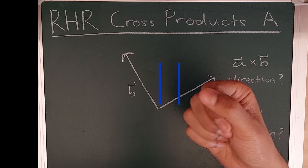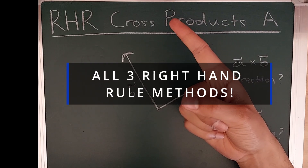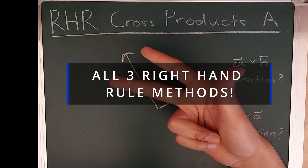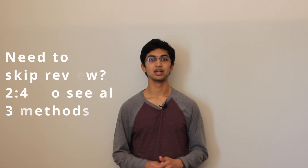What's up everyone? Today we're going to be talking about the right-hand rule, a very useful tool when evaluating the direction of a cross product. It's important to understand why on earth we would ever need something like a cross product or a right-hand rule before even delving into it.